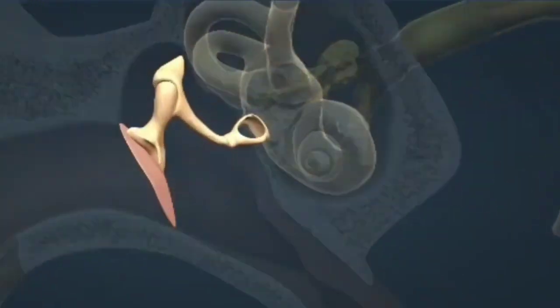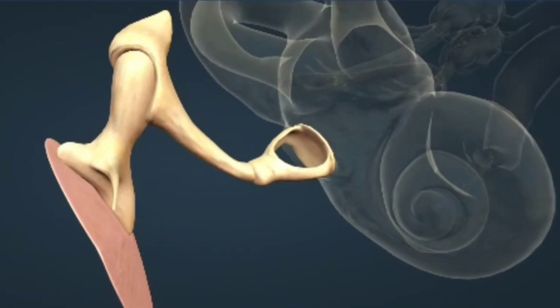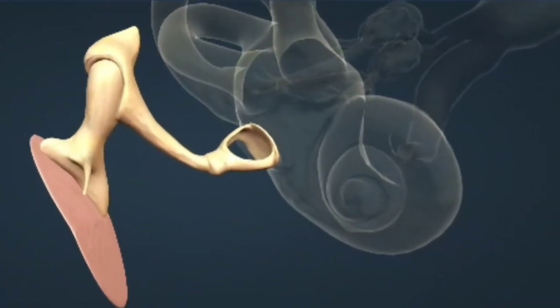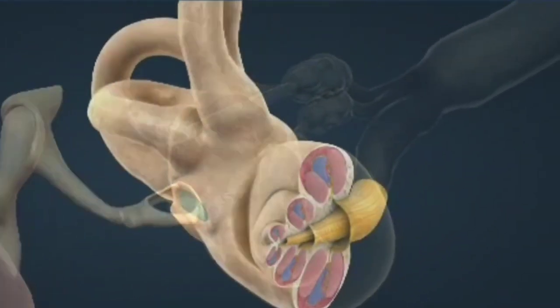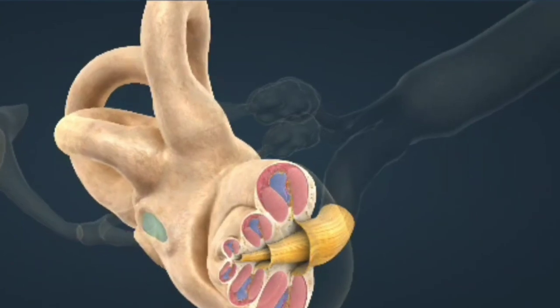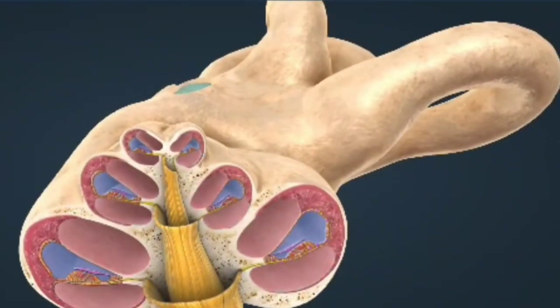The auricle is the visible external part of the ear, consisting of cartilage and skin. It is responsible for collecting sound vibrations from the outside world and funneling them into the ear canal, where they can then be picked up by the cochlea.